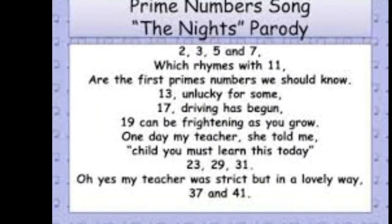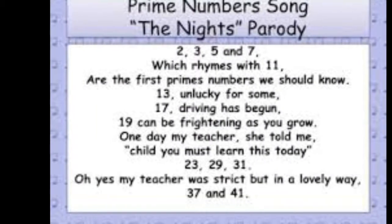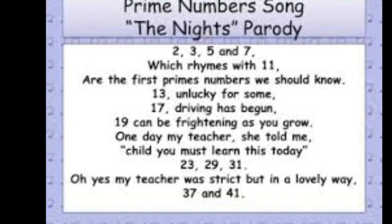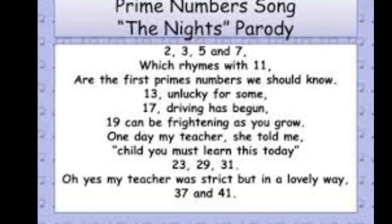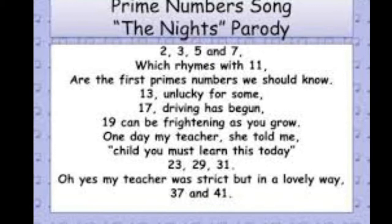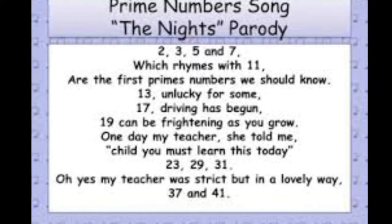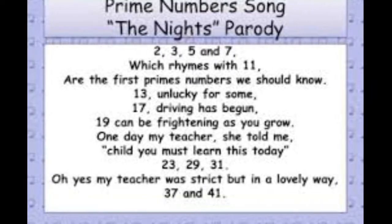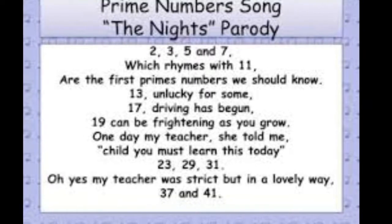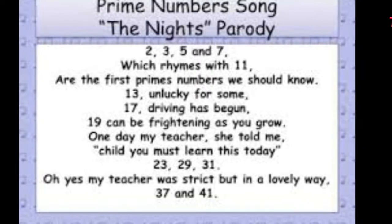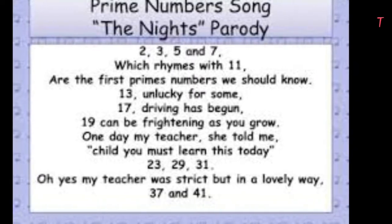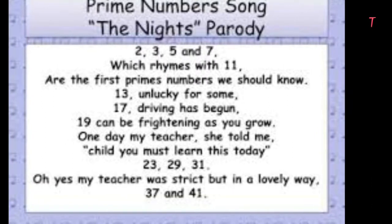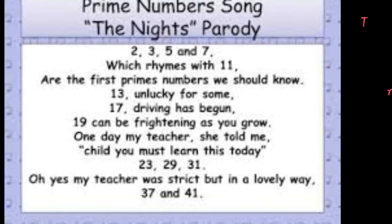Prime numbers are numbers that are bigger than one and cannot be divided evenly by any other number except one and itself. If a number can be divided evenly by any other number not counting itself and one, it is not prime and is referred to as a composite number. Prime numbers are whole numbers that must be greater than one, and as a result, zero and one are not considered prime numbers, nor are any numbers less than zero.